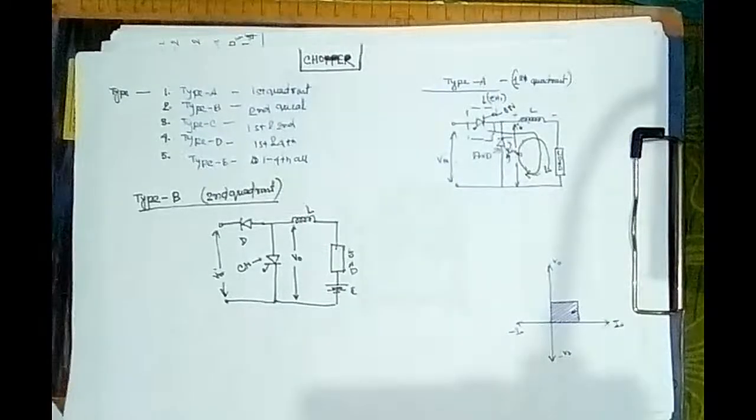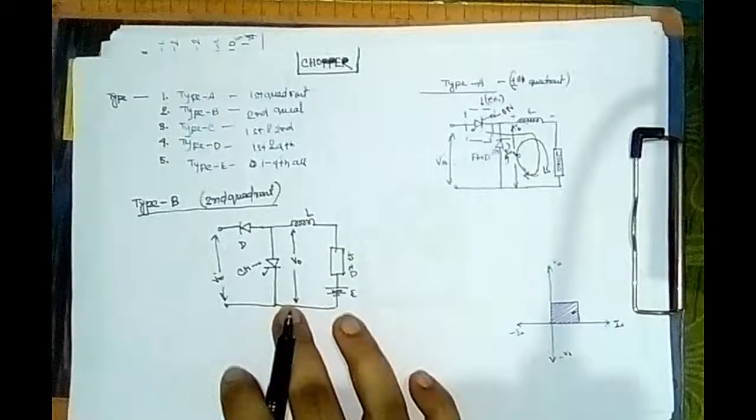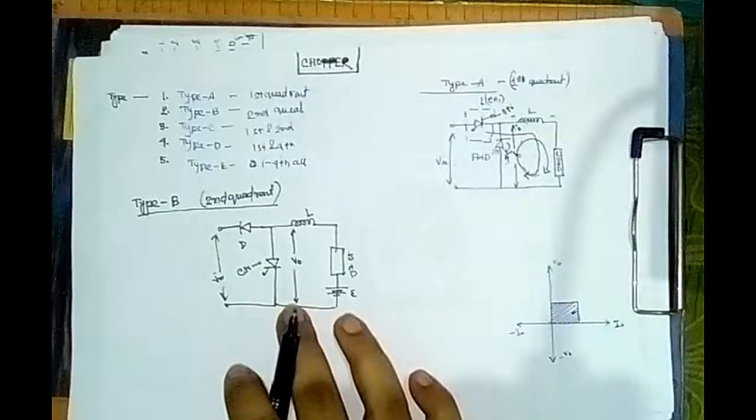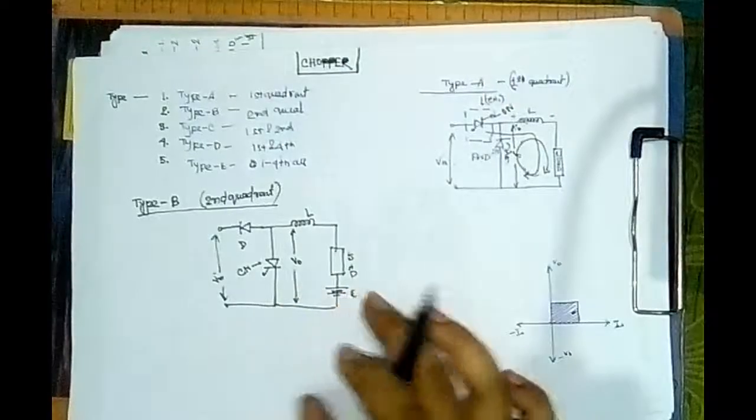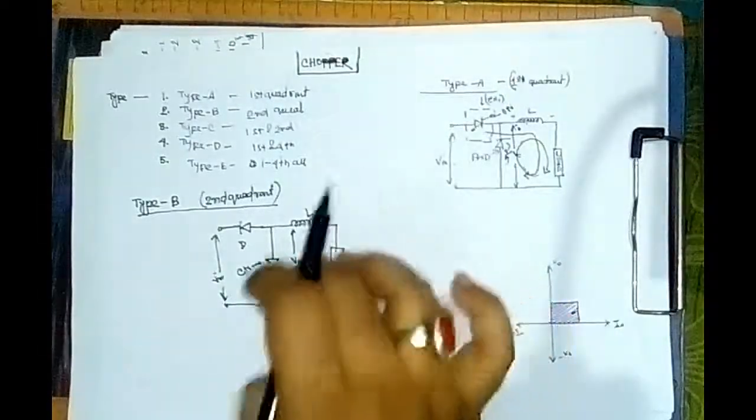Now, the circuit arrangement of Type B chopper is shown here. The voltage source is part of the load, for example back EMF, like a DC motor. The load has a voltage source in it.